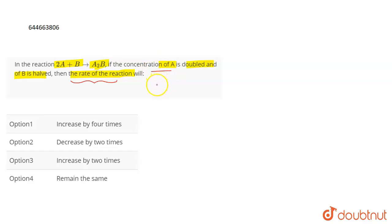In such questions we assume that this is an elementary reaction. We assume that the stoichiometry is the order of the reaction, the order with respect to that particular reactant. So the rate law for this reaction will be K into concentration of A to the power of 2 because of its stoichiometric coefficient and the concentration of B raised to the power 1.